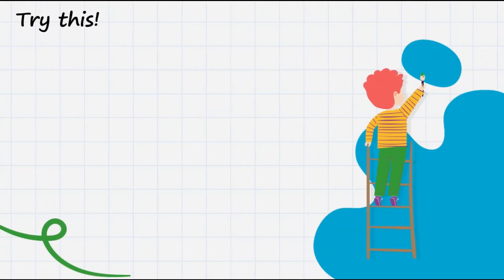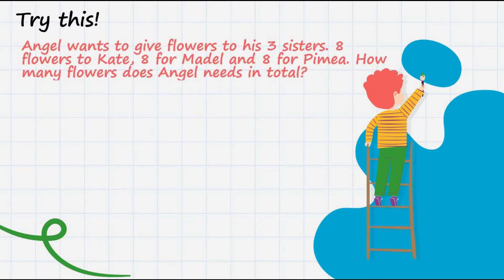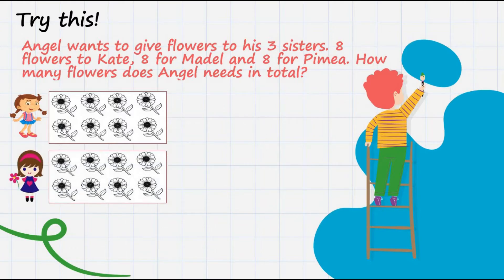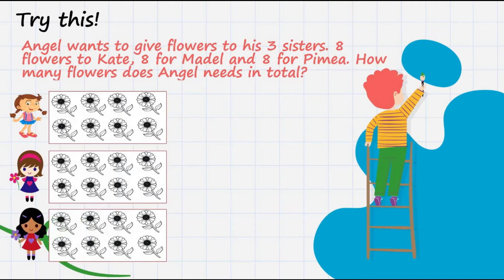Now, try this. Angel wants to give flowers to his 3 sisters. 8 flowers to Kate, 8 flowers for Model, and 8 for Pimea. How many flowers does Angel need in total?